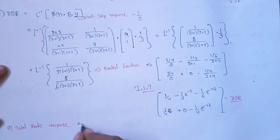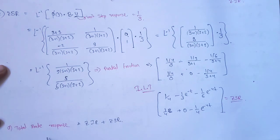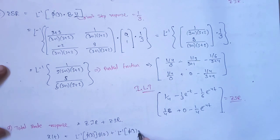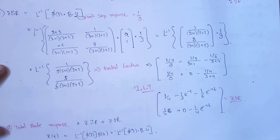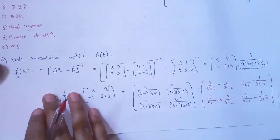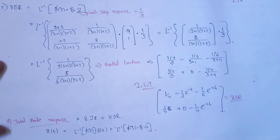To find the total state response x(t), we add the zero input response and the zero state response. The zero input response is φ(s) times x(0), and the zero state response is φ(s) times B times U(s). Adding these two equations gives the total state response.